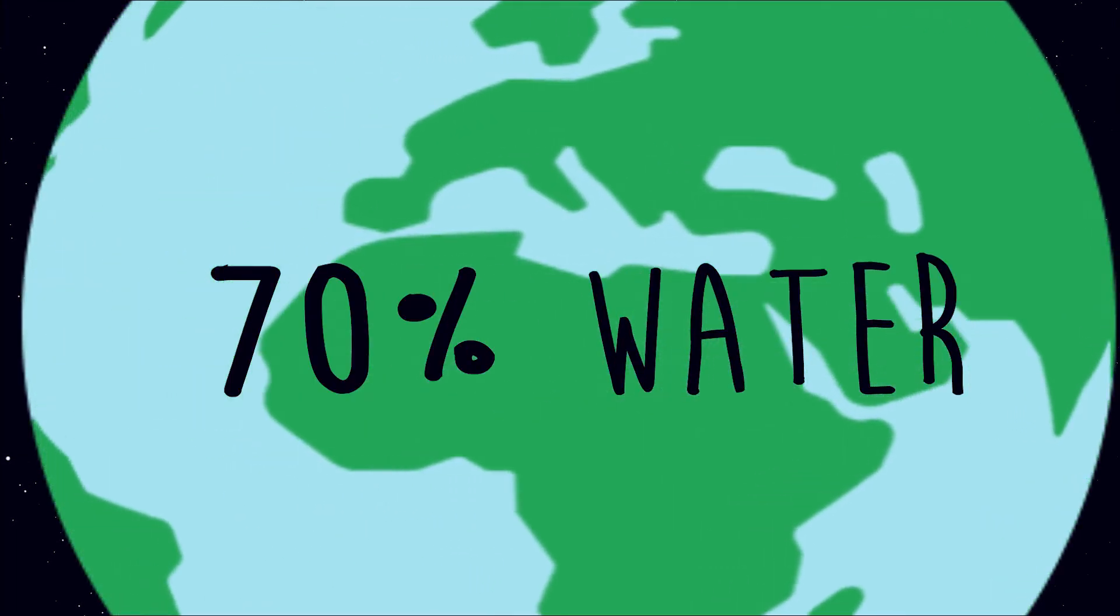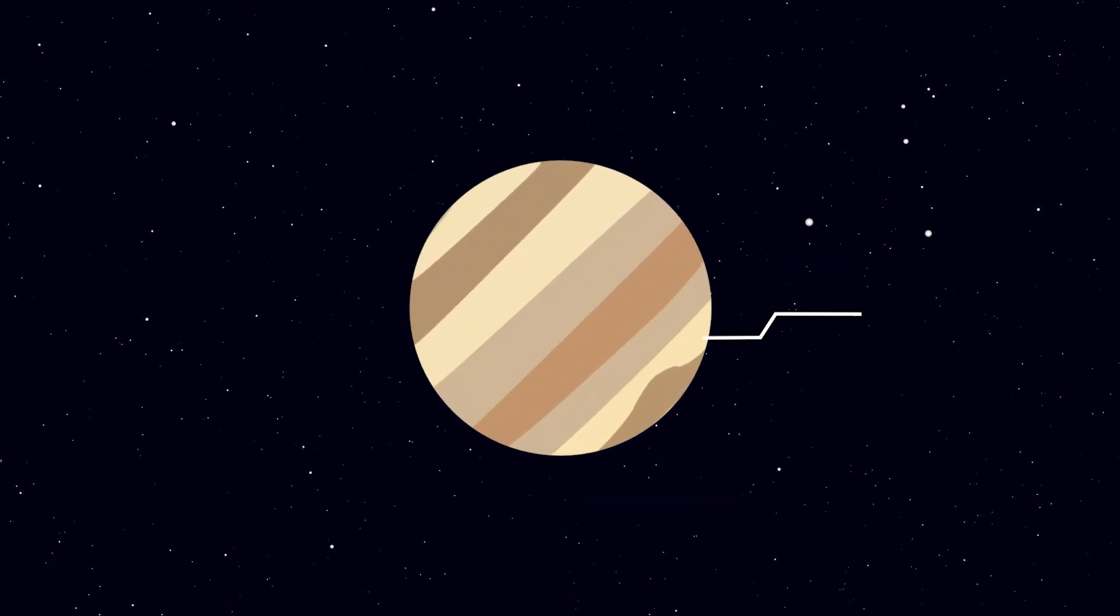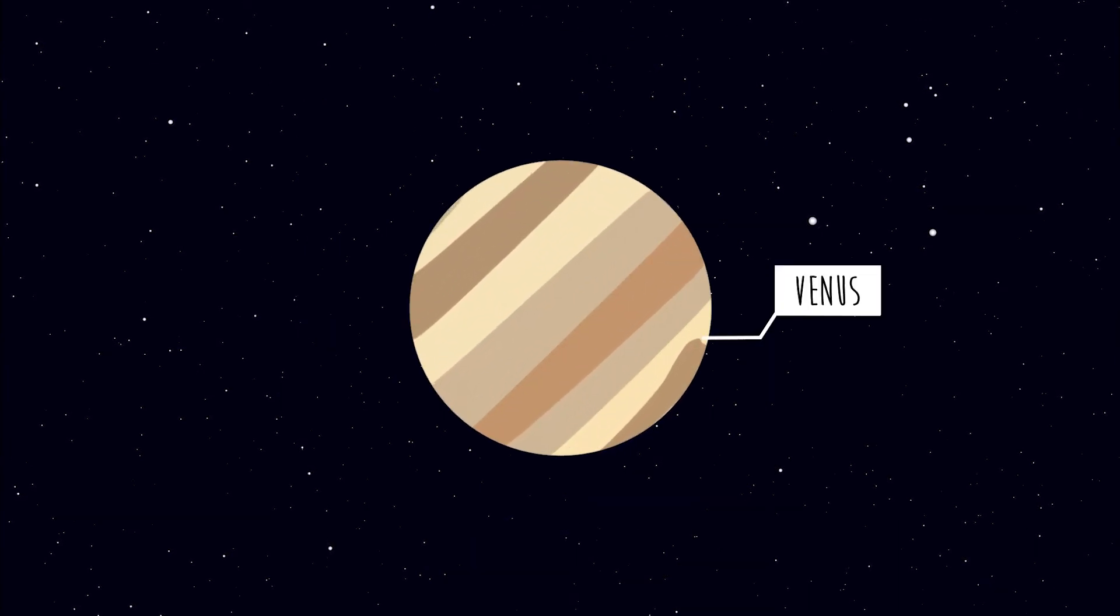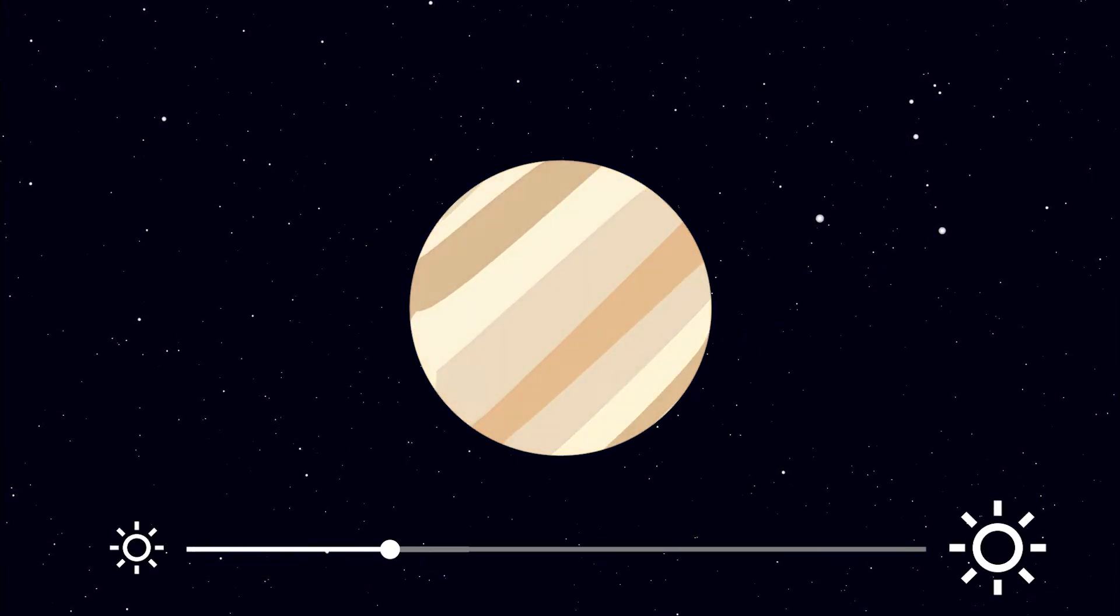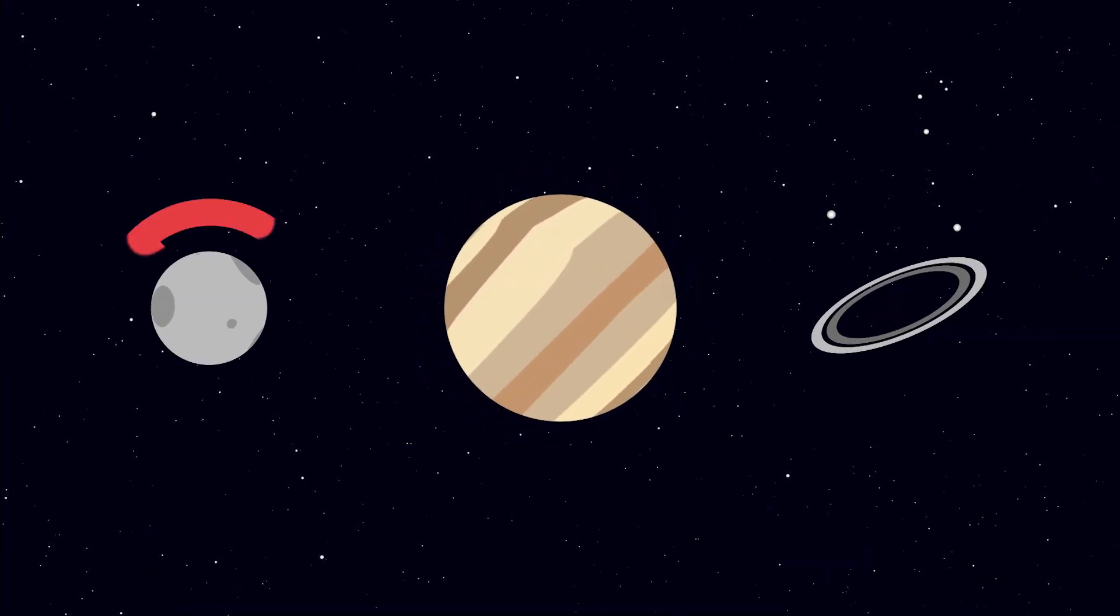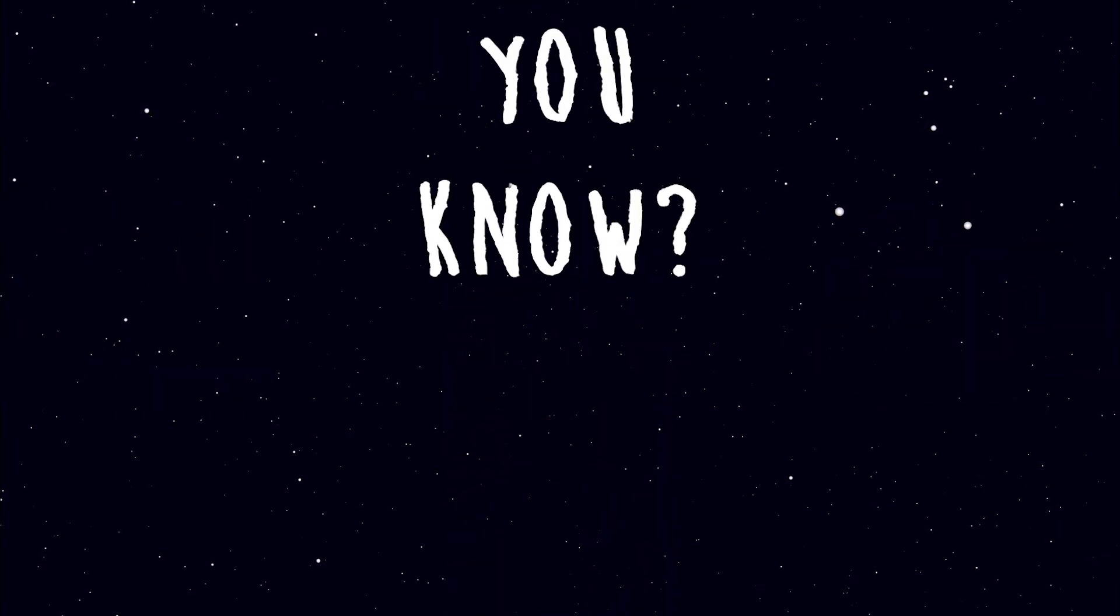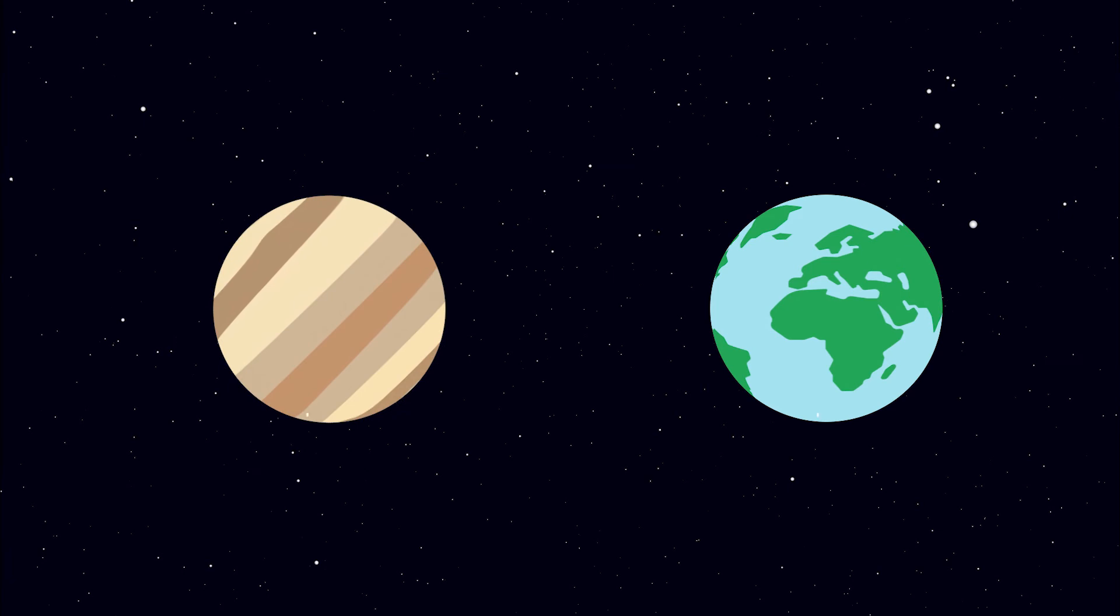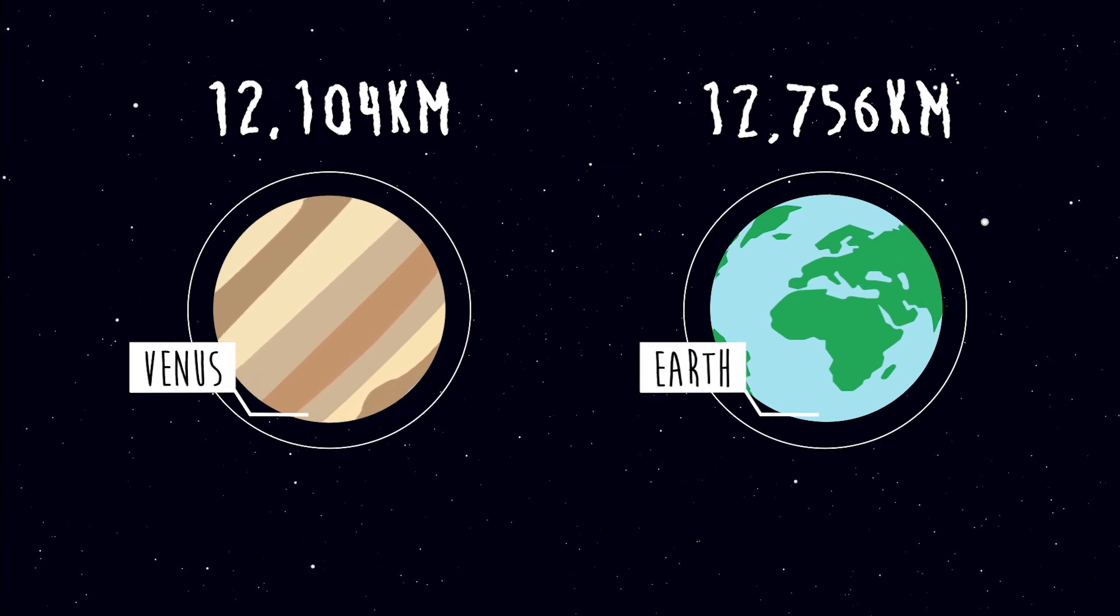Venus is the second planet from the Sun and it is also the second brightest object in the night sky after the moon. It has no moons and is also ringless. Venus is nearly as big as the Earth with a diameter of 12,104 kilometers.